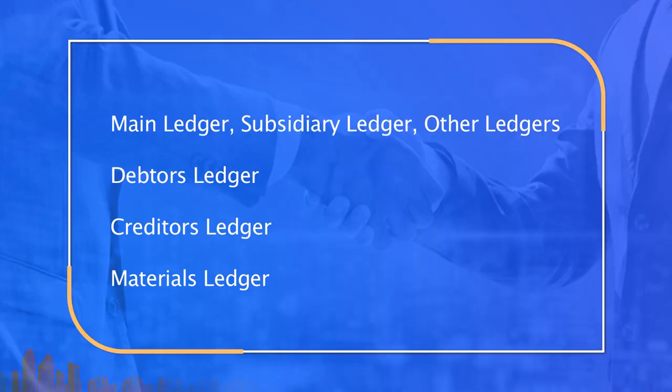To record credit transactions, the books of account include: books of original entry — that is the journal — and the cash book for cash receipts and payments. For ledgers, we have the main ledger, subsidiary ledger, other ledgers, debtor ledger, creditors ledger, and materials ledger.